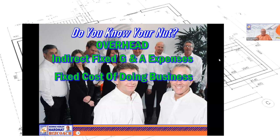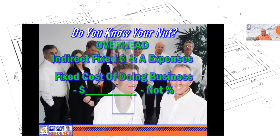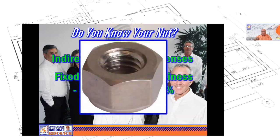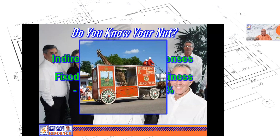Fixed cost of doing business — it's not a percentage, it's a lump sum amount of money. Do you know your overhead? It's your nut — how much you have to crack to cover overhead plus profit. In the old days, when the circus came to town, they would take the nut off the wagon wheel so the wagon couldn't move until they paid the rent. That's the nut — they get the nut back when they pay. That's the overhead.